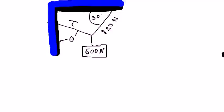Number 8. Consider the 600 newton weight held by two cables shown below. The left hand cable has tension T and makes an angle of theta with the wall. The right hand cable has tension 820 newtons and makes an angle of 30 degrees with the ceiling.